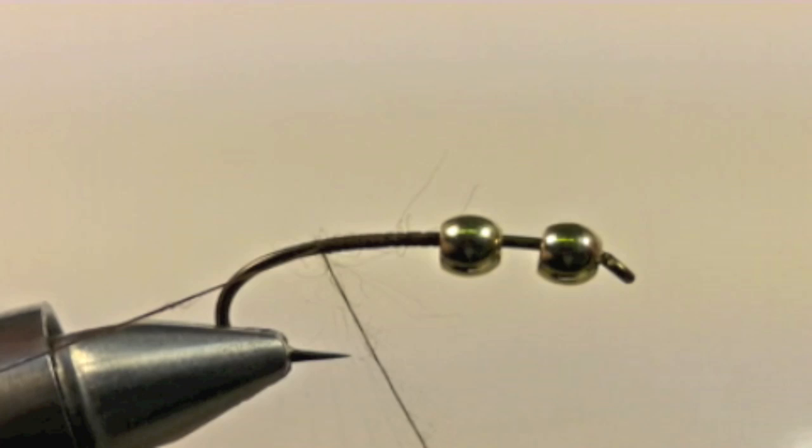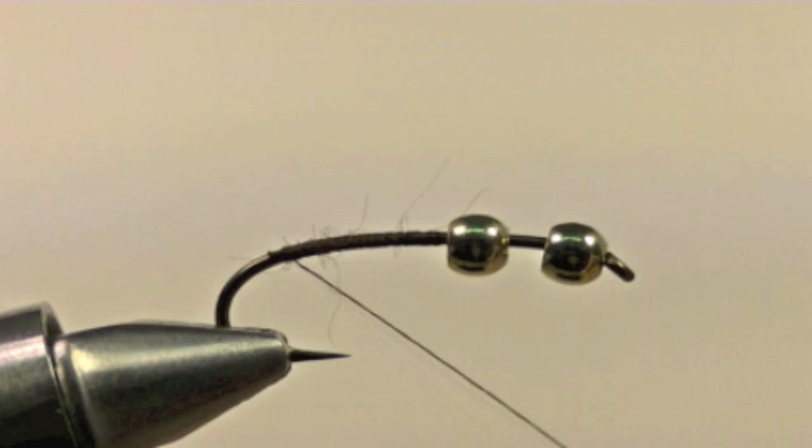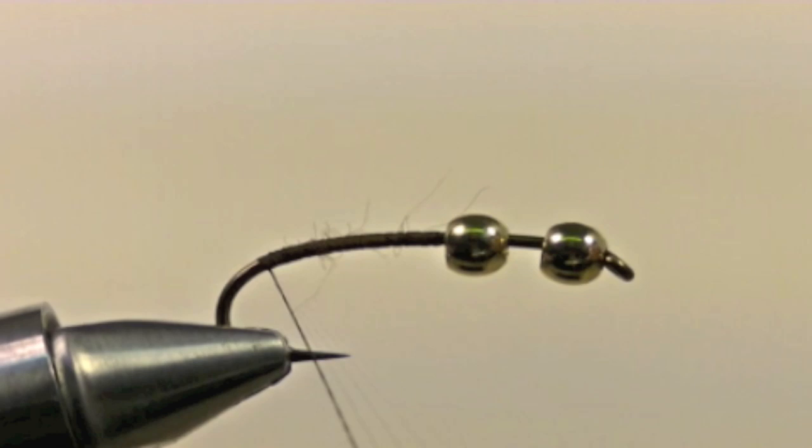Start with two beads on the shank of the hook. Start your thread about mid shank behind the back bead and bring your thread back to the bend of the hook. Clip off the tag end of the thread, then bring your thread back just a little ways further.